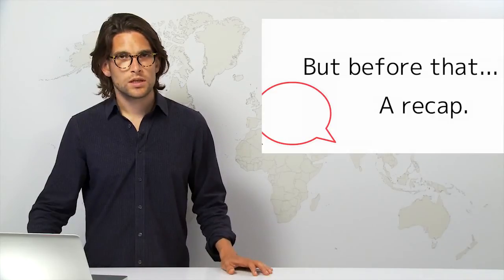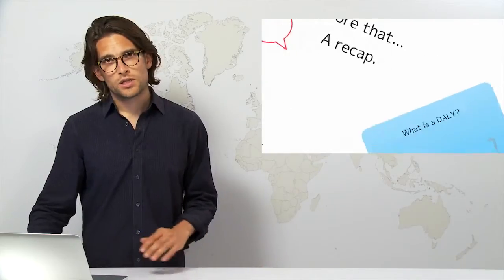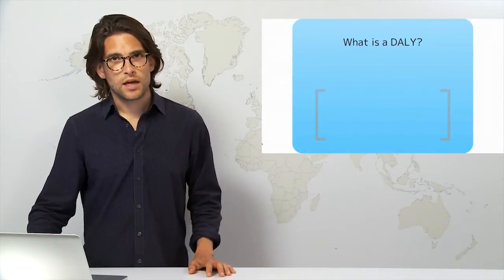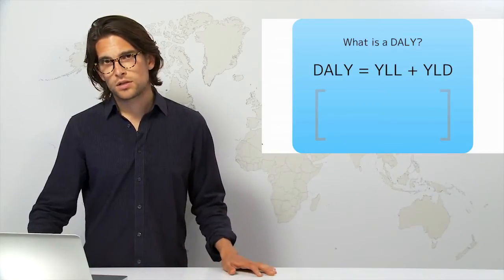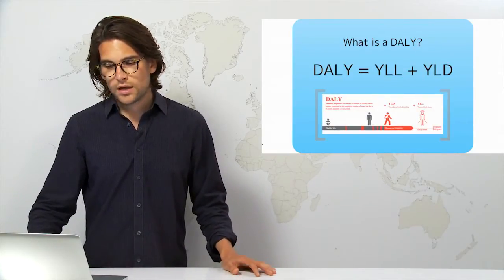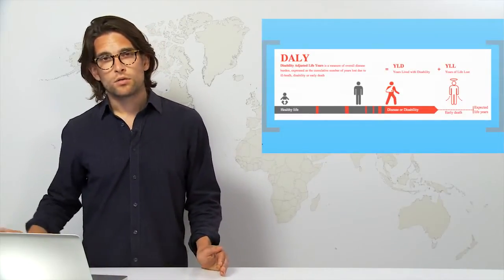This is going to be the main indicator that we use to monitor burden and disease outcomes for the risk factors but also diseases associated with non-communicable diseases. So disability-adjusted life years, as we explained back at the start of the course, includes years of life lost plus years of life lost to disability.